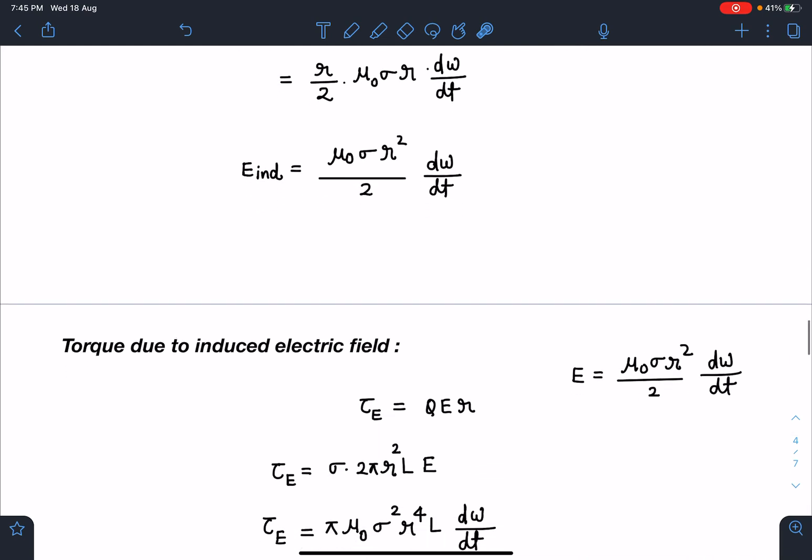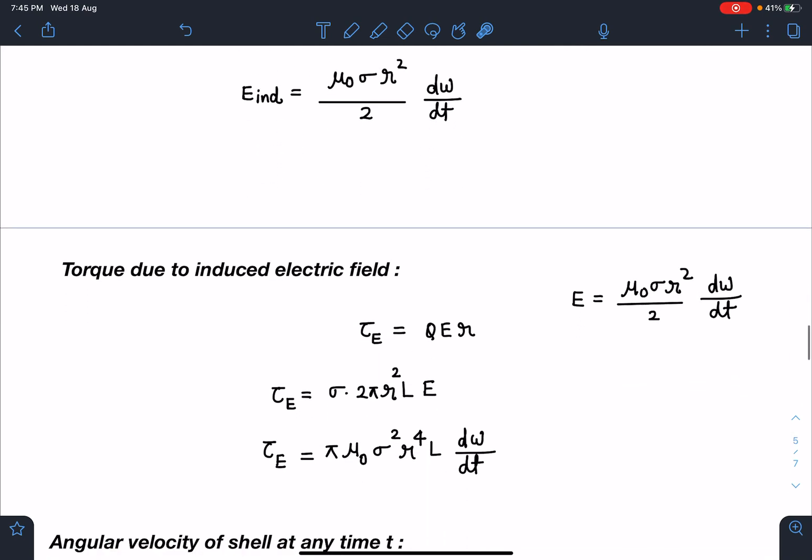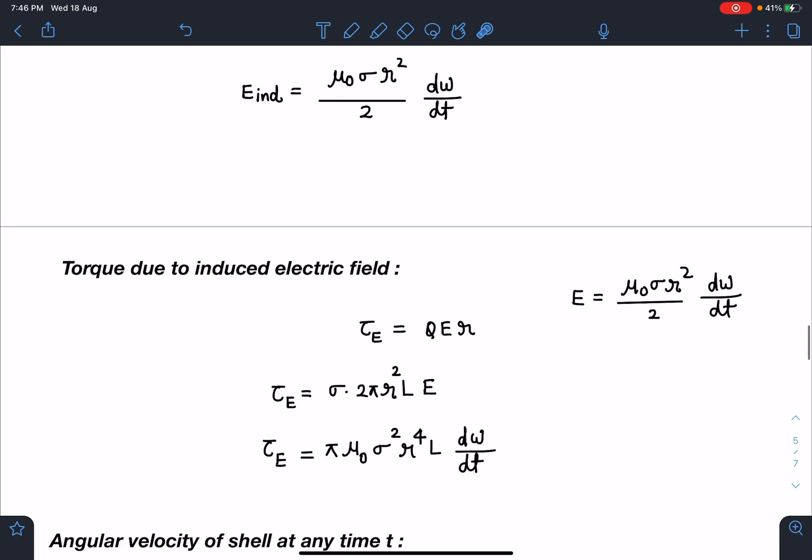Let's go for the next step. Now we are going to calculate torque due to induced electric field. That is very simple here - qE is going to be the force and that will be tangential, multiplied by r. When I substitute the value of E, I am going to get τ_electric as π·μ₀·σ²·r⁴·L·dω/dt.